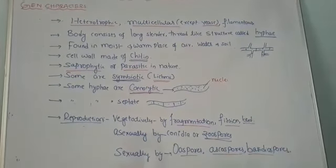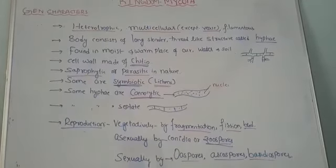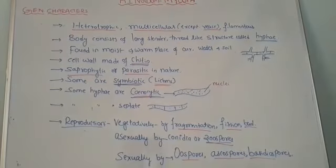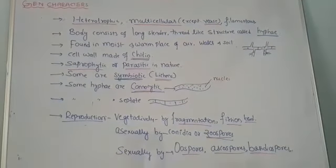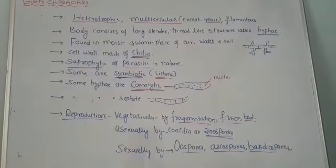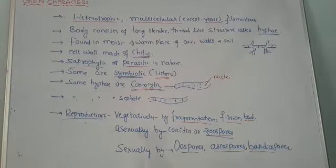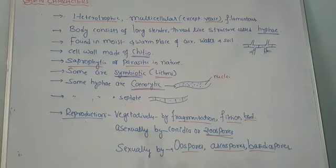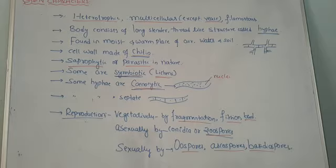With reference to reproduction, fungi reproduce by three different methods: vegetatively, asexually, and sexually. The vegetative method of reproduction occurs by fragmentation, where the thallus or filament divides into a number of fragments. Also by fission, where some fungi divide into two equal parts and each grows as an independent fungus. And by budding — bud formation takes place in the case of yeast. These three are the vegetative methods of reproduction.